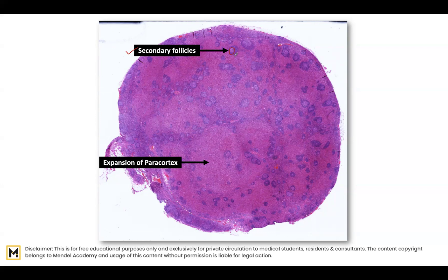What you see here is a dark area made up of the mantle zone and then a central pale area, which is an activated germinal center made up of B cells. The mantle zone consists of non-activated B cells. You can also see a few primary follicles here and there, where there is no pale central area. The way to recognize a secondary follicle is by identifying the germinal center within a lymphoid follicle.